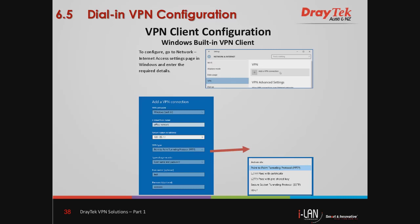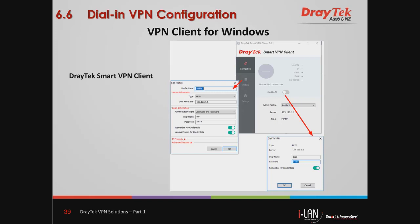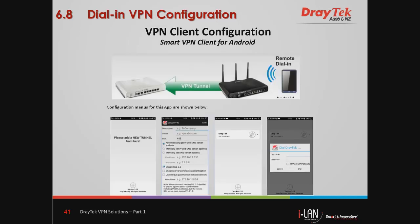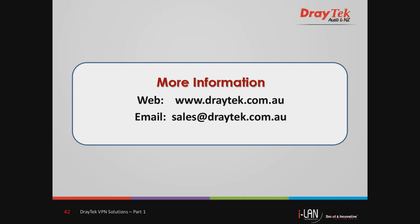Windows 10 has a built-in VPN client that caters for a number of VPN protocols, and DrayTek provides a Smart VPN client for Windows that can be used to set up different types of dial-in VPN connections. DrayTek also provides a Smart VPN client for Apple iOS and macOS devices. I would recommend having a look at the knowledge base on the DrayTek website — there are application notes available covering various scenarios. There's also a Smart VPN client for Android devices available for download from the Google Play Store. More information and application notes related to VPNs are available at www.draytek.com.au, and for product information you can send an email to sales@draytek.com.au. Thank you and bye for now.